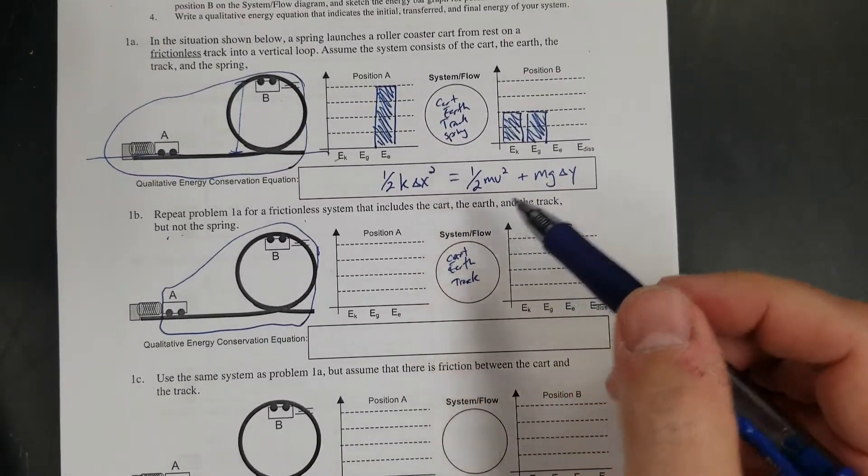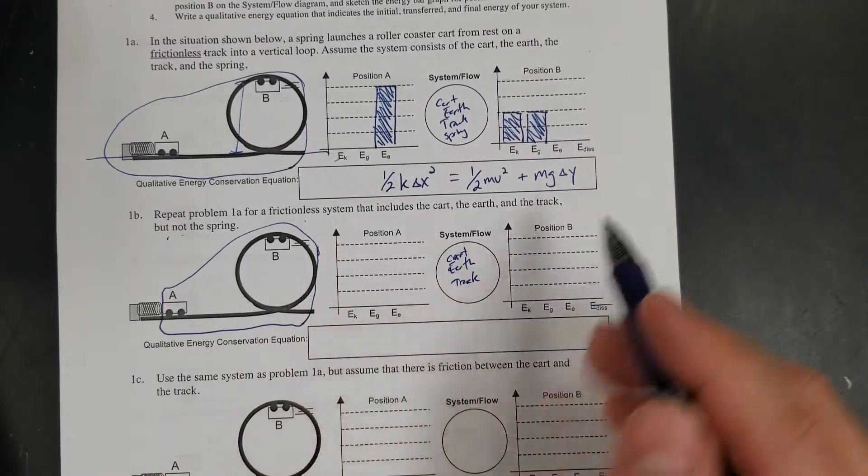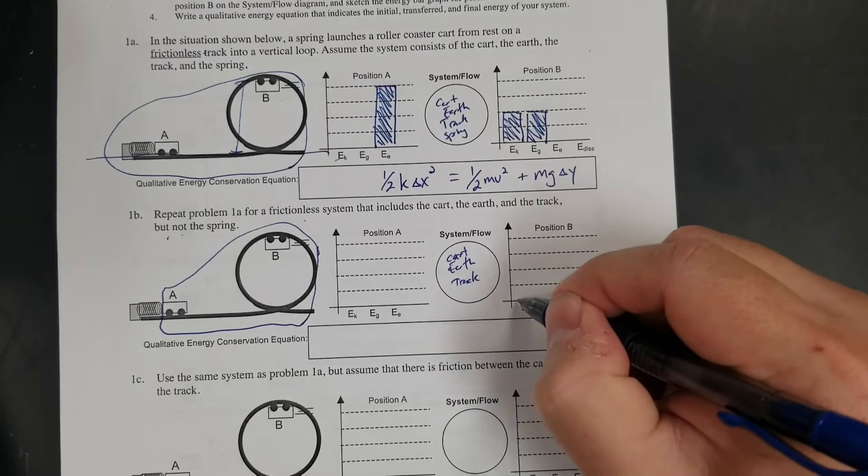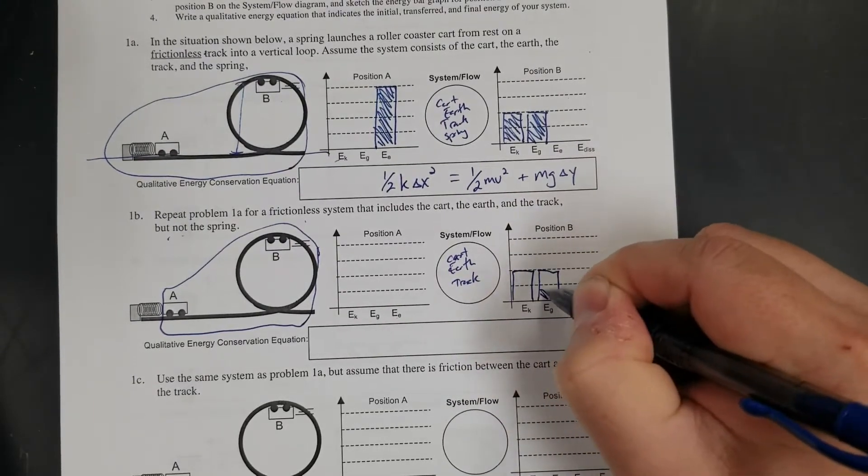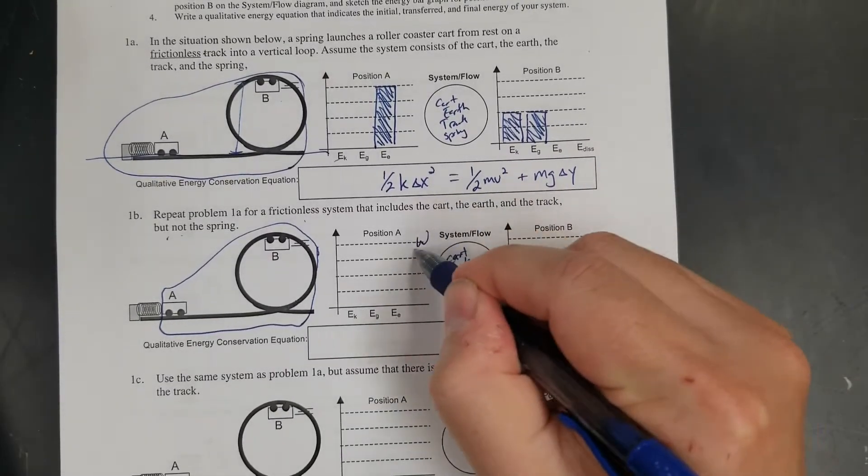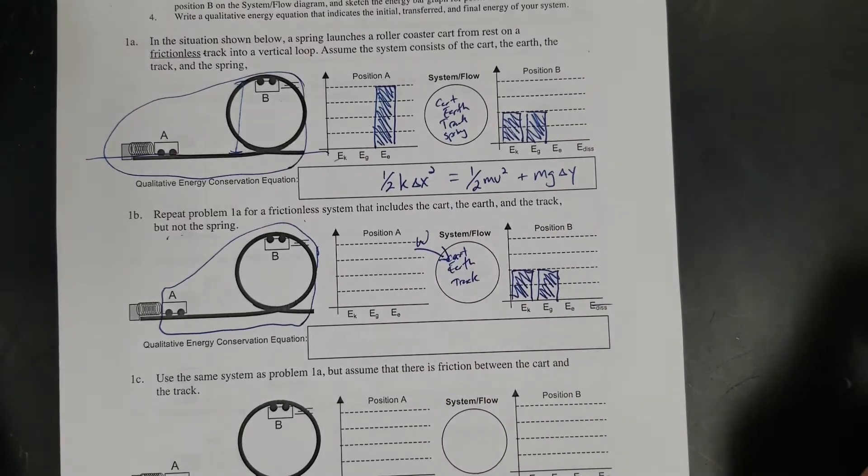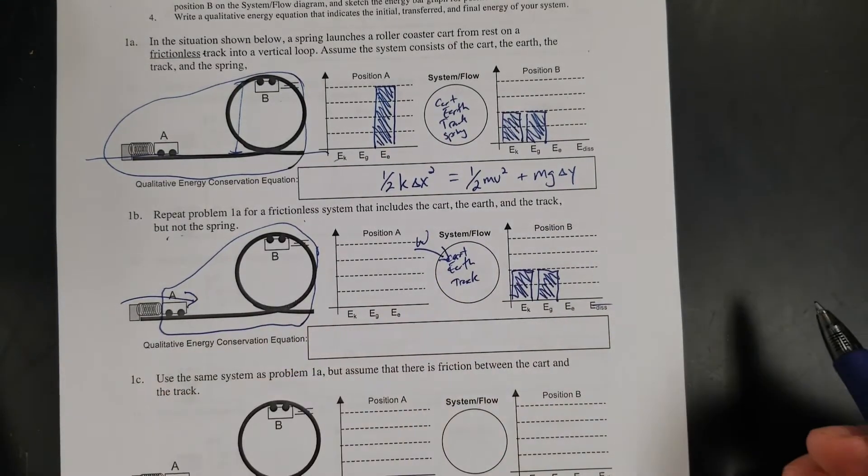At the end, it doesn't change. But at the beginning, there's no spring. So at the end, I'm going to stick with my four bars, two and two. But where did this energy come from? It had to come from work. I'm going to represent that saying work came into the system. The spring is outside, so it's putting energy in in the form of work.